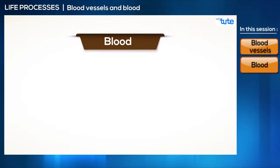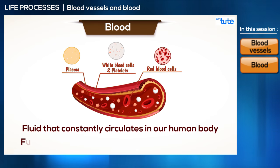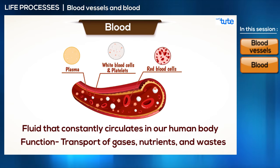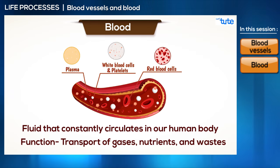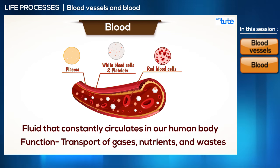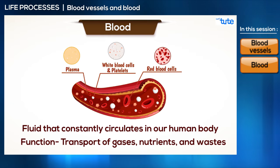Now let's talk about blood. Blood is a fluid that constantly circulates in our human body, transporting nutrients and different gases to each and every cell of the body. It also carries waste from different parts of the body. Blood is actually a tissue — a fluid connective tissue. Just like any other tissue, it is made up of different types of cells, but its matrix is fluid.